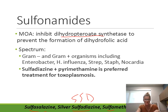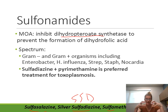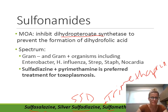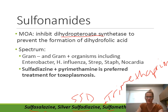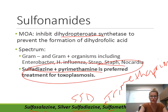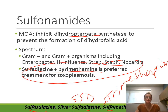Trimethoprim also blocks this same folate pathway, so combining trimethoprim with sulfamethoxazole produces a synergistic effect. Sulfadiazine can be combined with pyrimethamine — another folate antagonist — and that combination is the preferred treatment for toxoplasmosis. The broad spectrum of sulfonamides covers both gram-negative and gram-positive organisms, including Enterobacter, H. influenzae, strep, staph, and Nocardia.